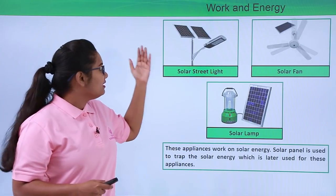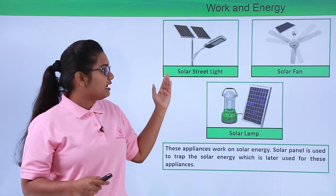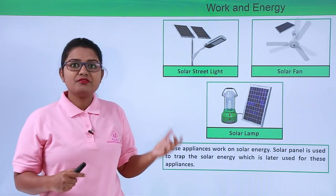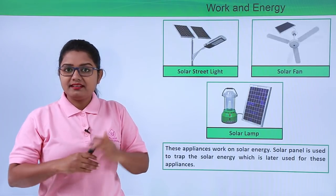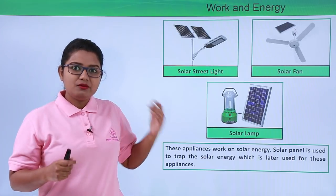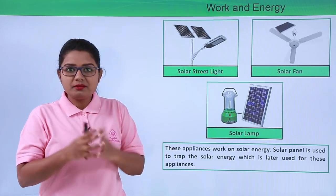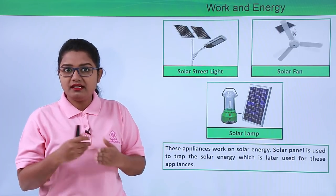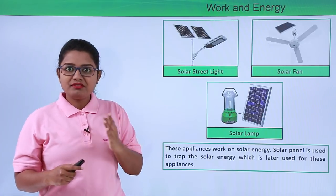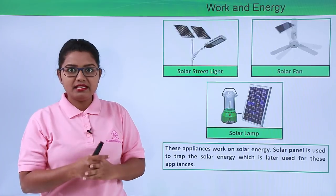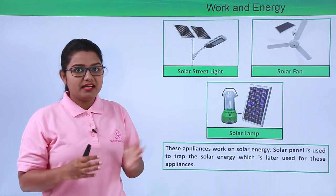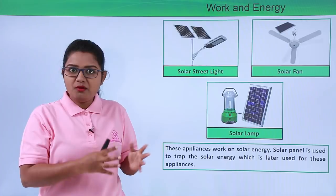Apart from electrical and solar energy, there are other kinds of energy like wind energy, tidal energy, and geothermal energy, which is extracted from the Earth's interior. These are some of the forms of energy we are able to use nowadays to make our lives simpler and to perform strenuous work.